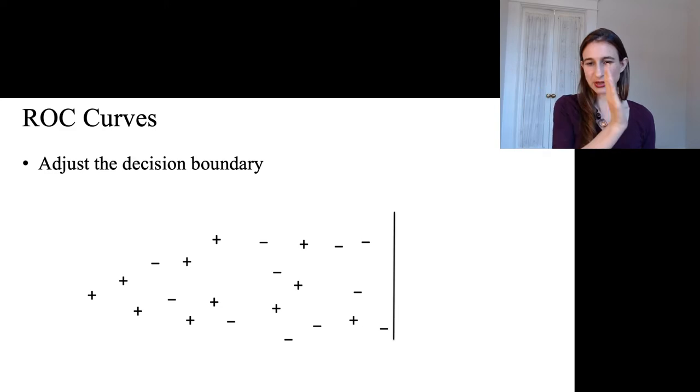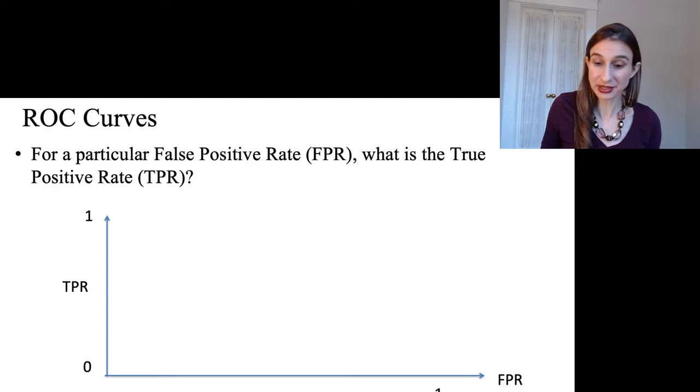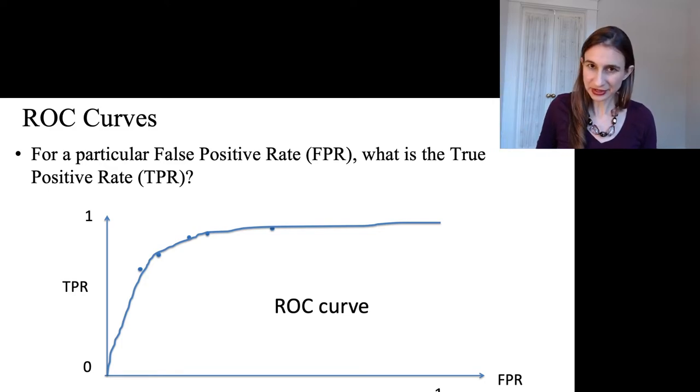I'll swing the decision boundary along the full range, and for each placement of it, keep track of the true and false positive rates. Then I'm going to plot them on a plot. Here they are, and I could keep going. And then in the end, I've plotted the ROC curve.